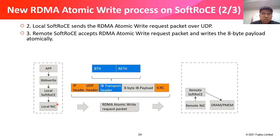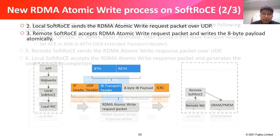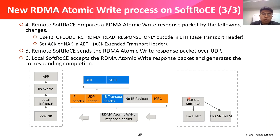Step 2: Local soft RoCE sends the RDMA atomic write request packet over UDP. Step 3: Remote soft RoCE accepts the RDMA atomic write request packet and writes the 8-byte payload atomically. Step 4: Remote soft RoCE prepares an RDMA atomic write response packet using IB opcode RC_RDMA_READ_RESPONSE_ONLY and sets ACK or NAK in the ACK extended transport header. Step 5: Remote soft RoCE sends the RDMA atomic write response packet over UDP. Step 6: Local soft RoCE accepts the RDMA atomic write response packet and generates the corresponding completion.